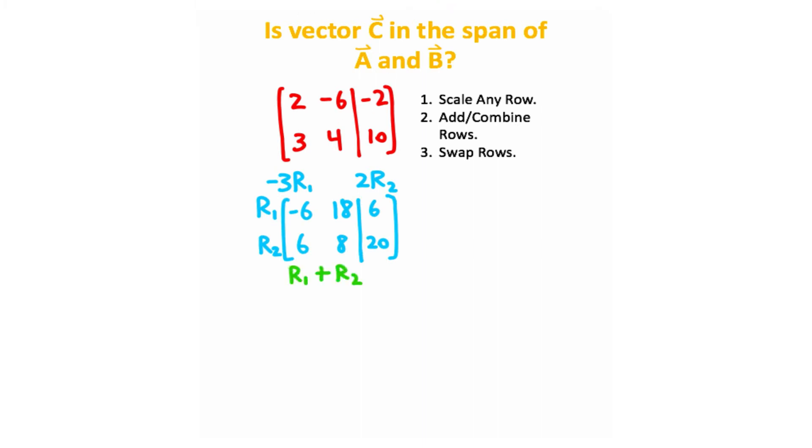Now what I'm going to do is take row one and add it to row two. Whenever you're adding two rows, this row will not change, but this row will. So row one plus row two, row one is not going to change, and row two is just going to be this combination. So negative six plus six, that gave us this zero. Eighteen plus eight, that gave us this twenty-six, and then six plus twenty gave us this twenty-six.